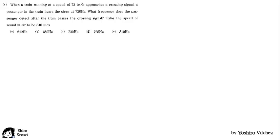When a train running at a speed of 72 km per hour approaches a crossing signal, a passenger in the train hears the siren at 720 Hz. What frequency does the passenger detect after the train passes the crossing signal?